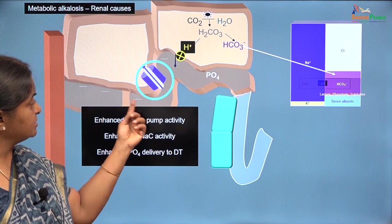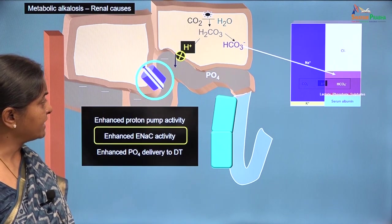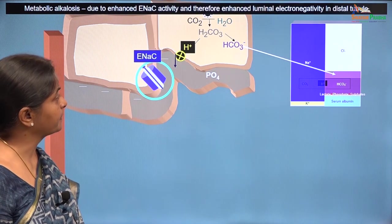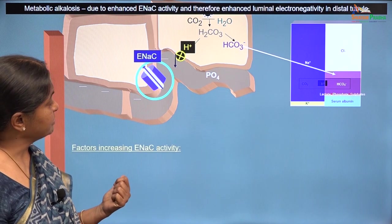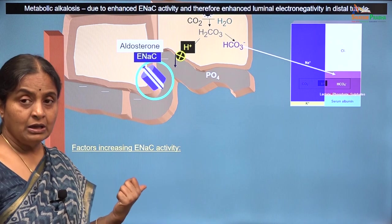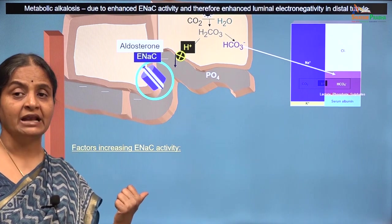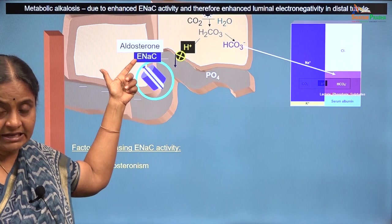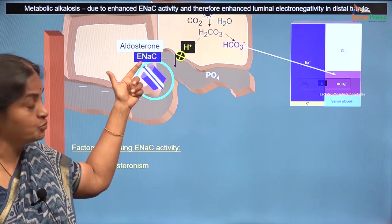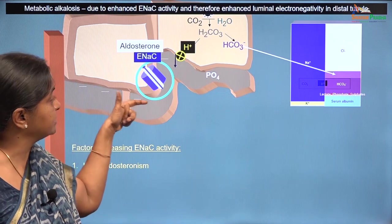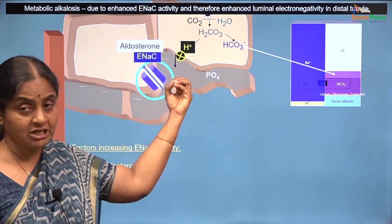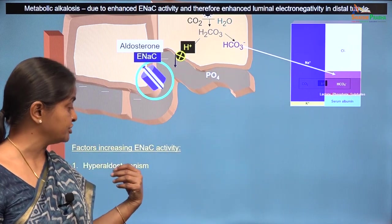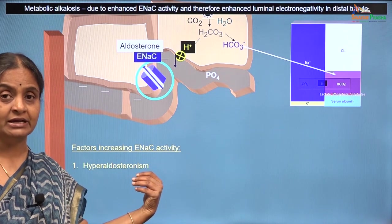Now we will consider metabolic alkalosis due to increased epithelial sodium channel activity. The epithelial sodium channels are upregulated with aldosterone. Therefore in hyperaldosteronism, because of increased ENAC activity — that is enhanced reabsorption of sodium through epithelial sodium channels — there is a consequent increase in luminal electronegativity and consequent pulling out of protons, so more bicarbonate can be generated. Hyperaldosteronism can therefore lead to metabolic alkalosis.